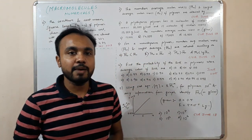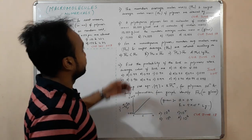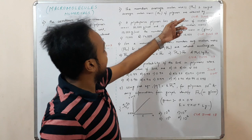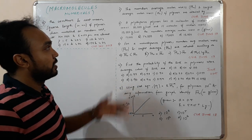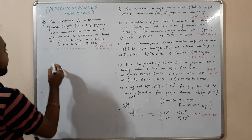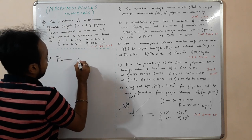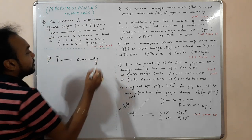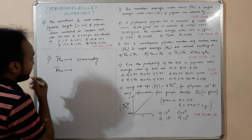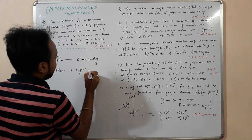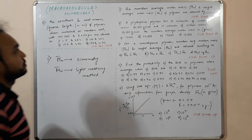Good evening friends. Now I am going to discuss a few numericals on the macromolecule chapter. The first question asks for experimental methods to determine the number-average molar mass (Mn) and the weight-average molar mass (Mw). Mn is determined by osmometry, while Mw is determined experimentally by the light scattering method.